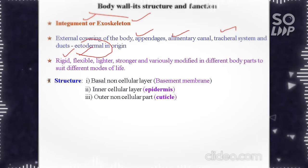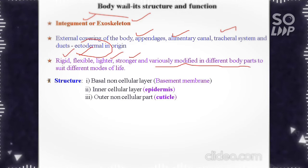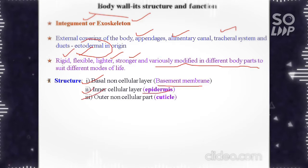Those organs which are covered by this exoskeleton are ectodermal in origin. The exoskeleton is rigid, flexible, lighter, stronger and variously modified in different parts to suit different modes of life. The structure of the body wall has three parts: the first is basal non-cellular layer called basement membrane, the second is inner cellular layer called epidermis, and the third is outer non-cellular part which is the cuticle.